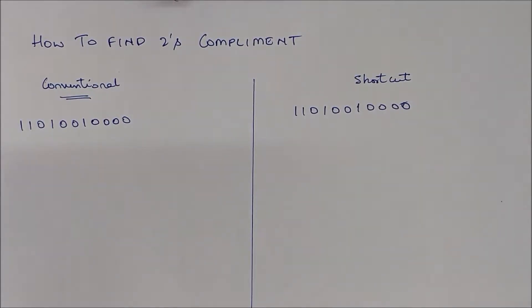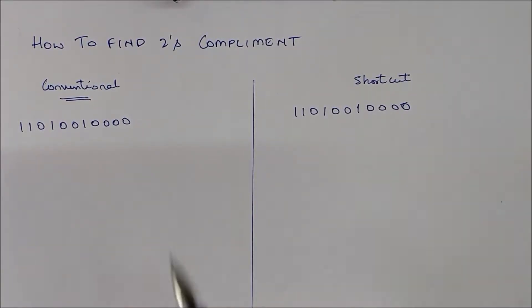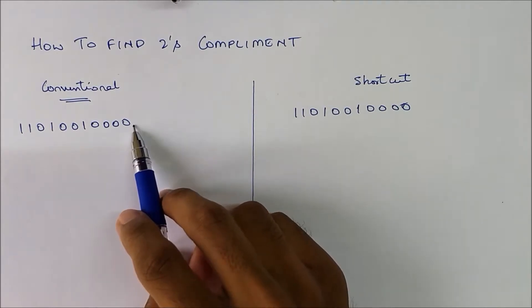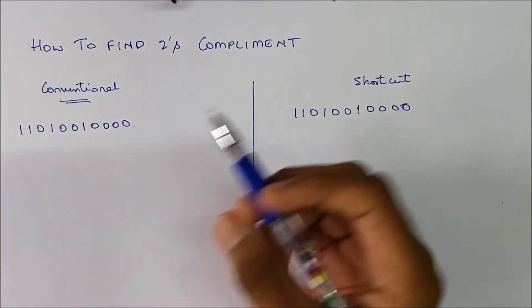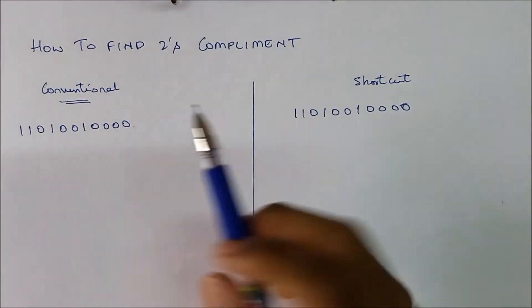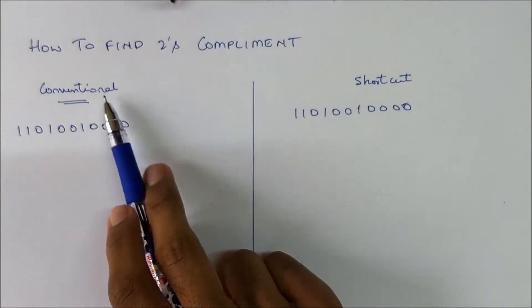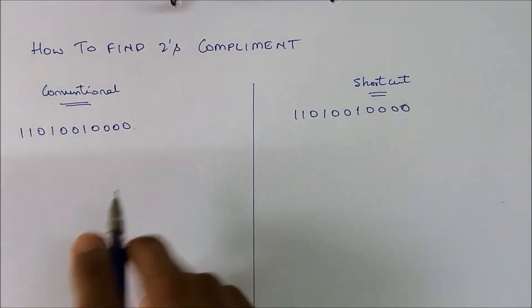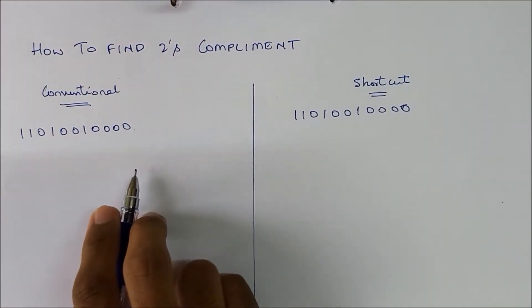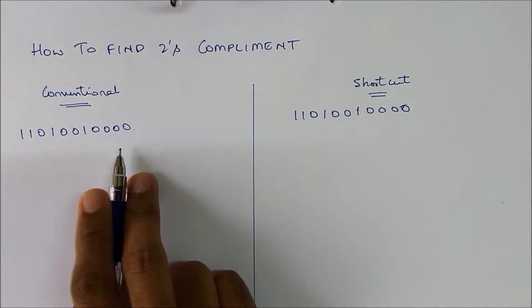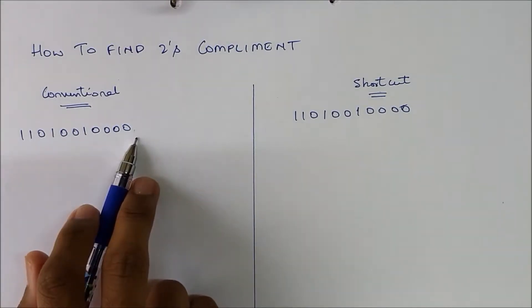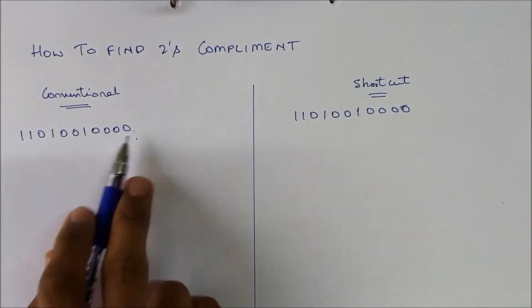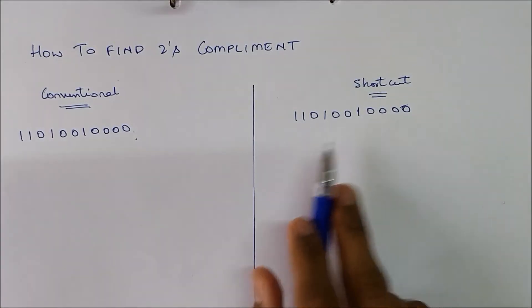In this video I am going to show you how to find the 2's complement of a given binary number. First we will do the conventional method and then we will move on to the shortcut. We will take the same example for the shortcut as well.